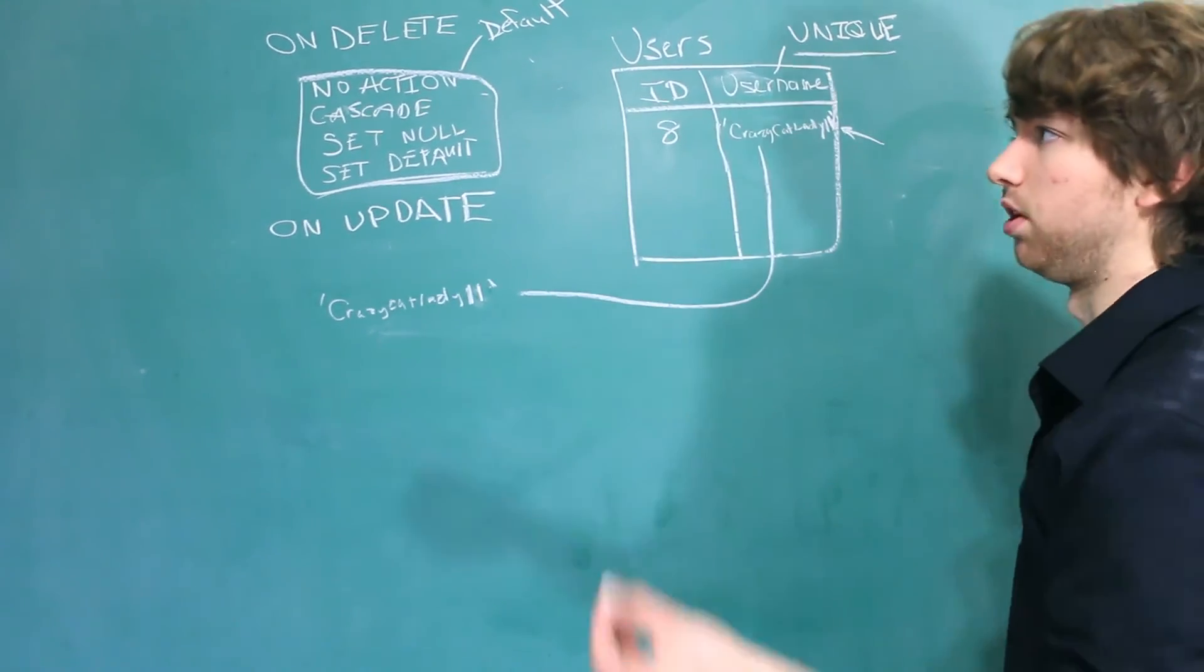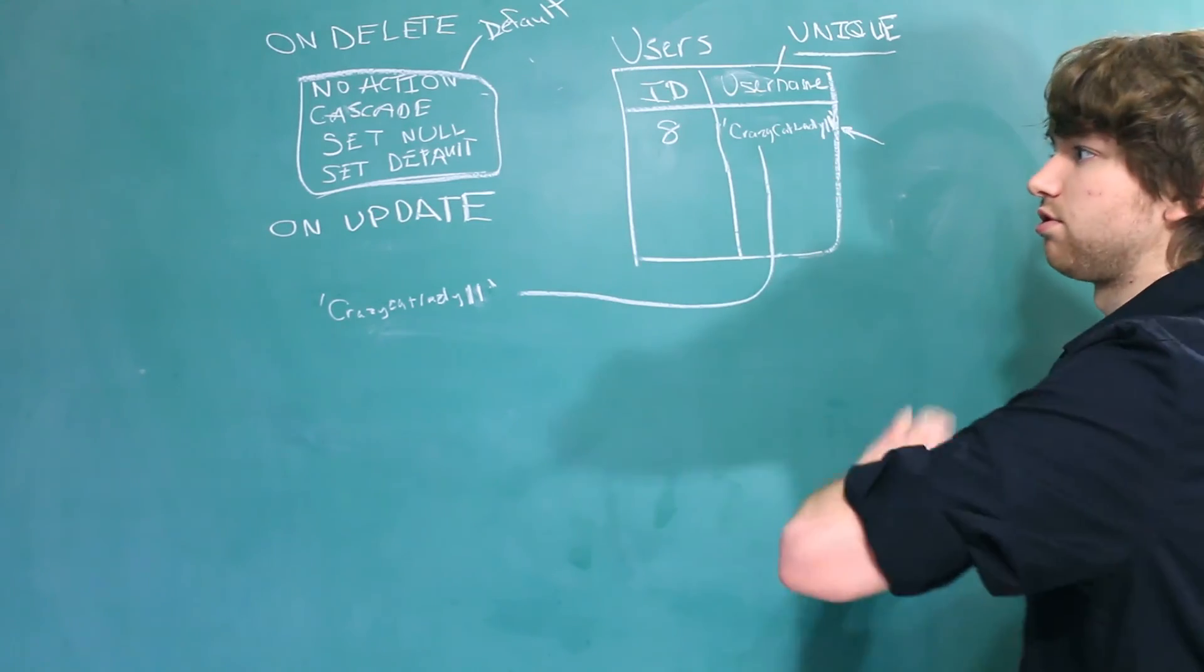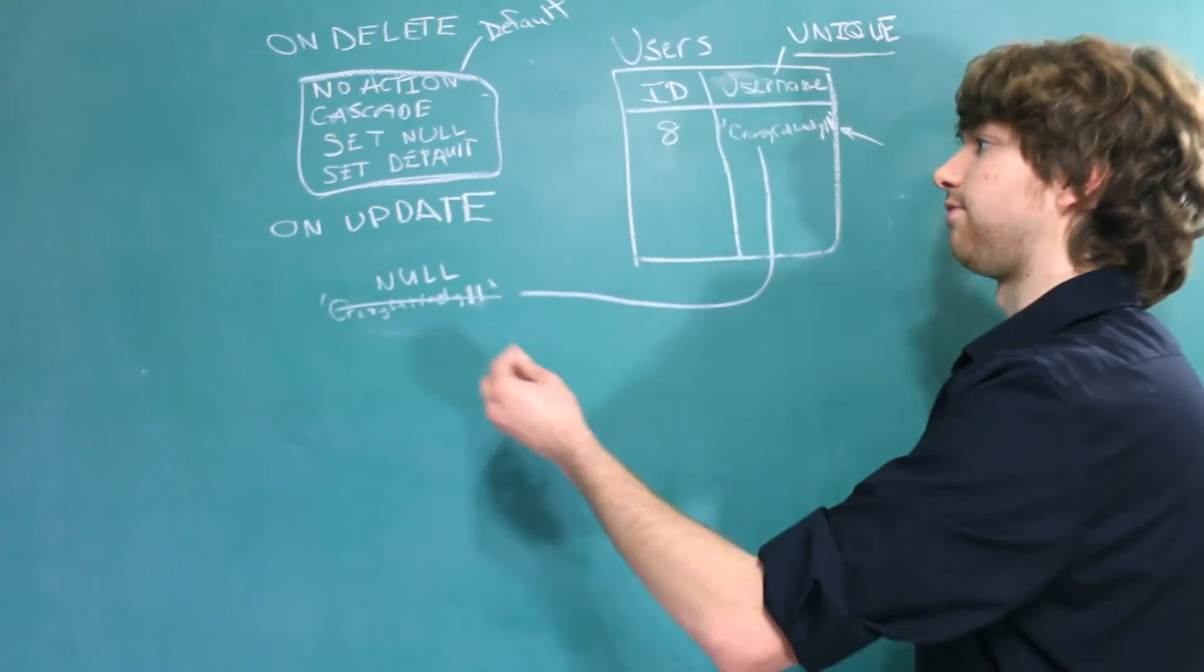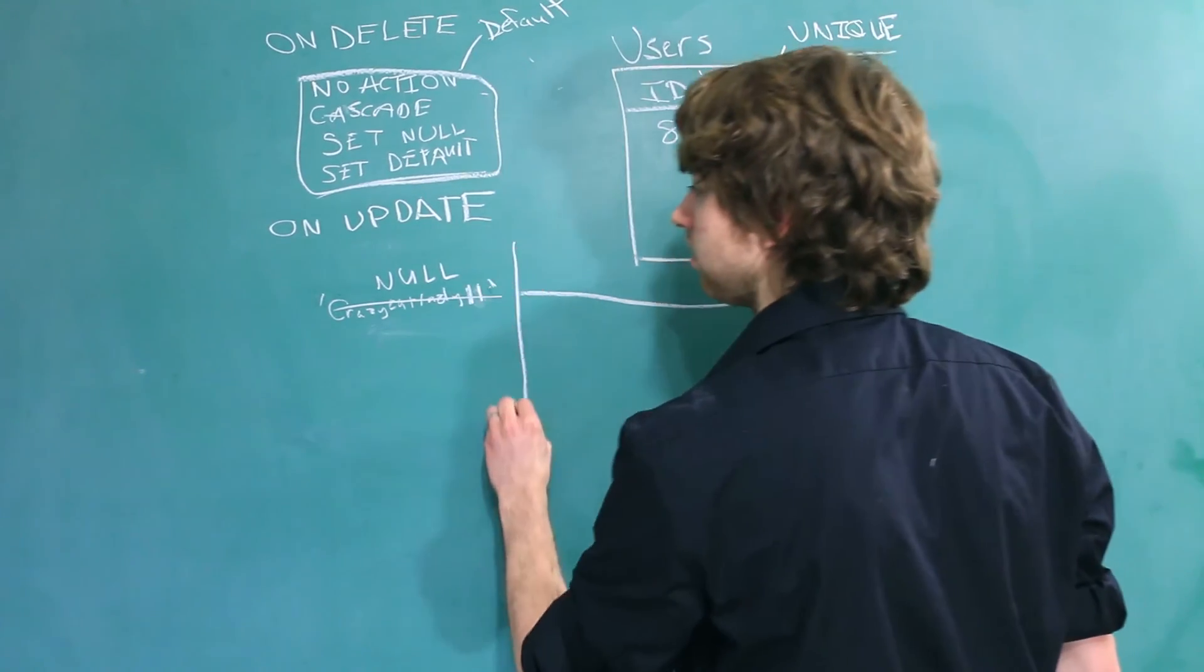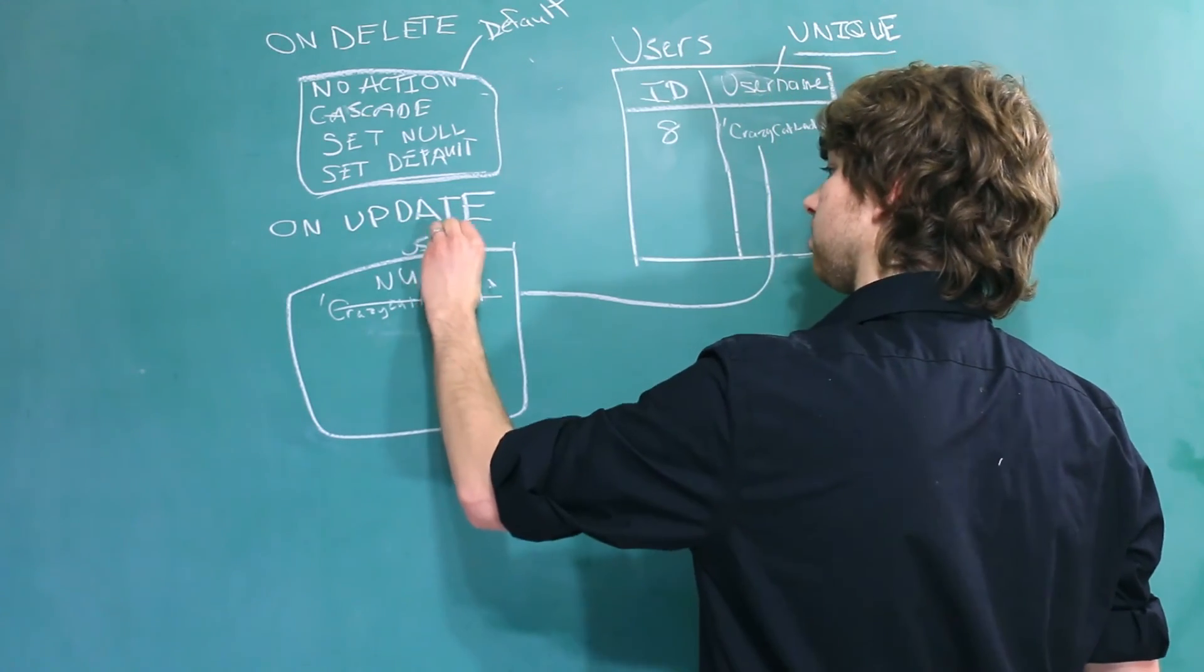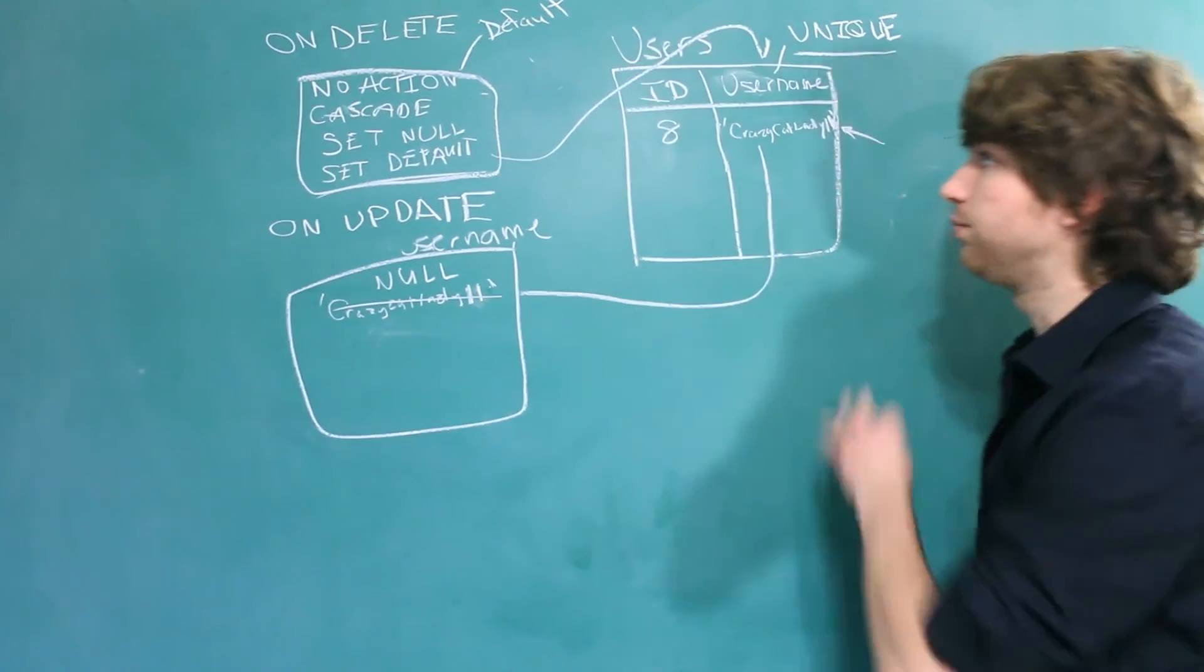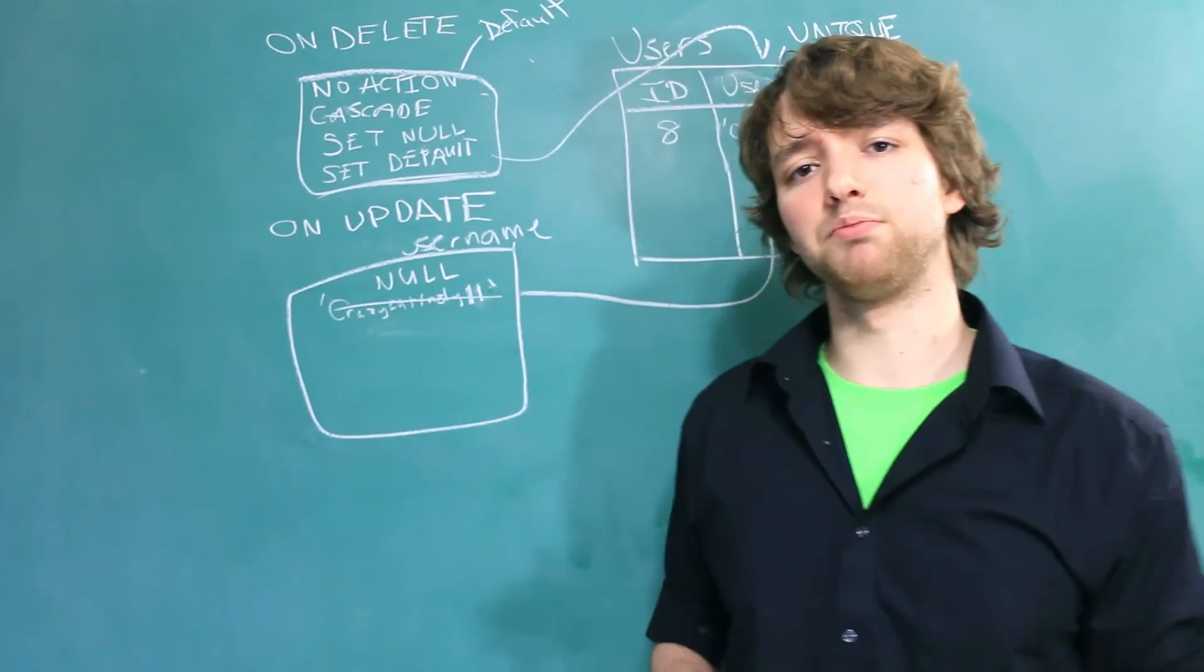That would be more like what YouTube is doing, so that means any comment that references this username would change. SET NULL would change this username to null. And finally, SET DEFAULT would change it to whatever the default username is. So whatever this table is in, we would have a column, let's say username, and this could be in whatever table, it doesn't matter, and you would give it a default. So hopefully that kind of gives you a good summary of ON DELETE and ON UPDATE. It kind of gets complex, but if you just break it down piece by piece, you'll eventually get it.